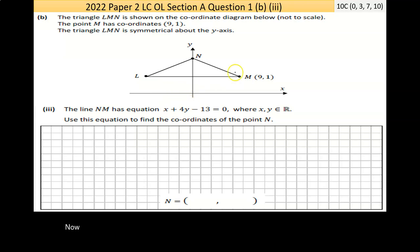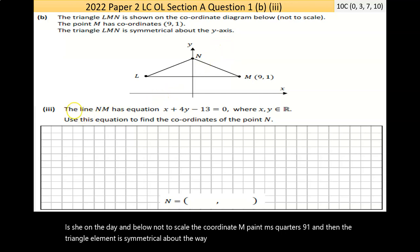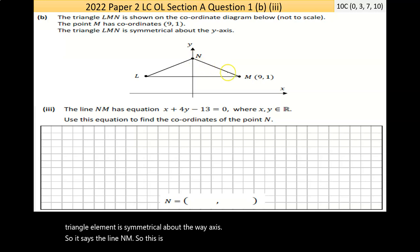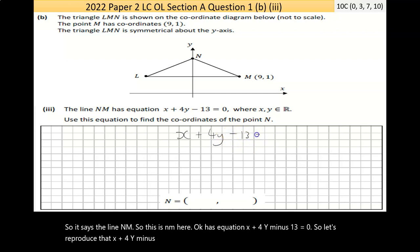Now, question 1, part b, part 3 says, the triangle LMN is shown in the diagram below, not to scale. The point M has coordinates 9, 1. And the triangle LMN is symmetrical about the y-axis. The line NM, so this is NM here, has equation x plus 4y minus 13 equals 0.